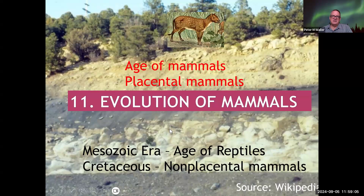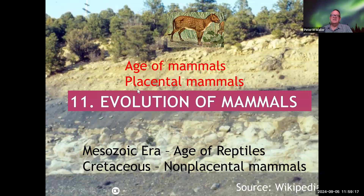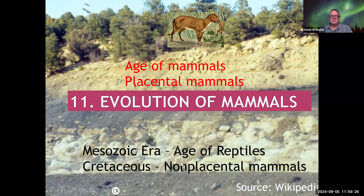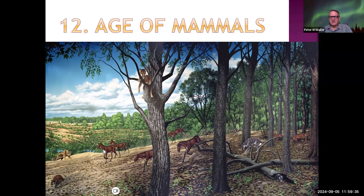Then we'll talk about the evolution of mammals — first during the age of dinosaurs, so we got our start in the age of dinosaurs. Then there was a mass extinction event, and above that is the age of mammals: all the dinosaurs died and then we took over. So in chapter 12, we cover the age of mammals, where our modern types of mammals evolved.